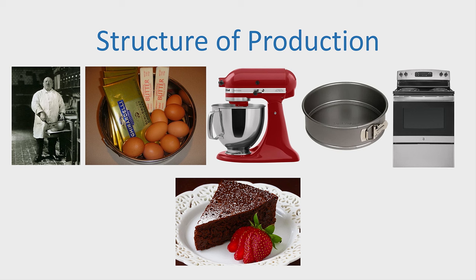And here we have a more exhaustive yet simplified structure of production for a flourless chocolate cake. To get the flourless chocolate cake, we need land and labor, semi-sweet chocolate, butter, eggs, electricity, an oven, a microwave oven, a spring-form pan, a mixer, a bowl, and a spatula — all of these things.